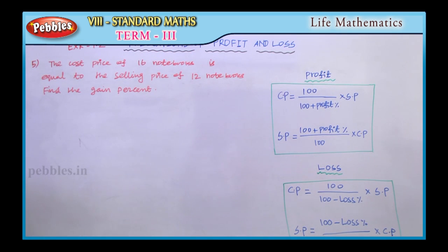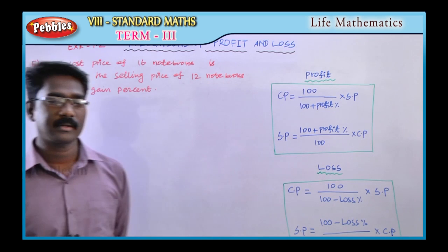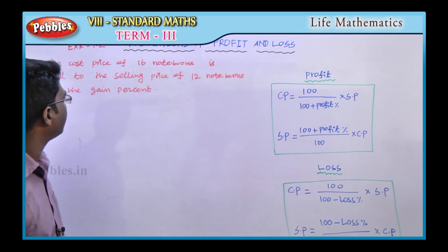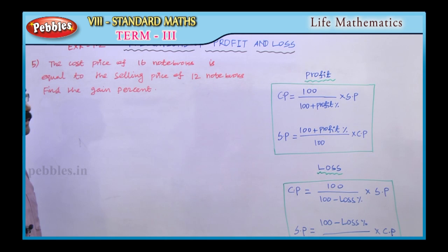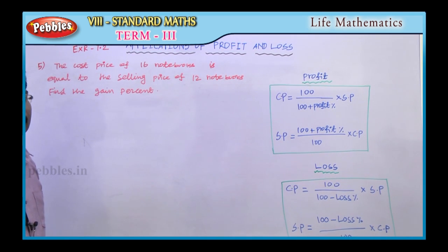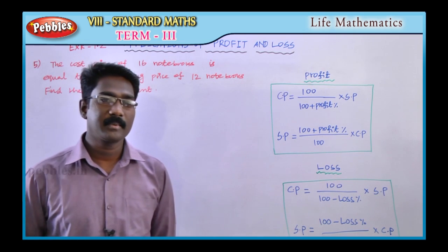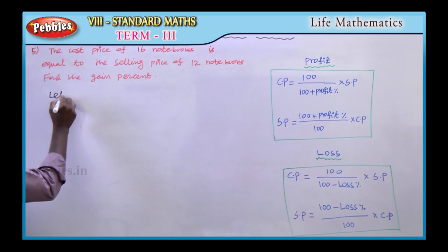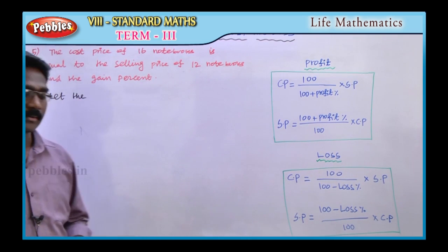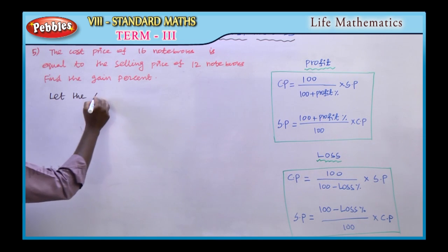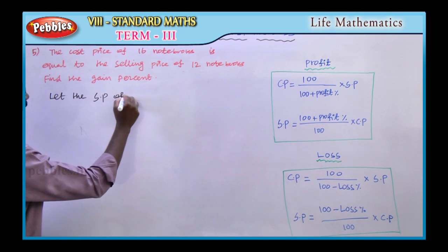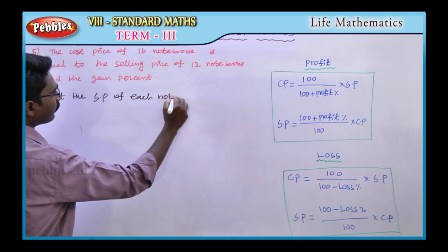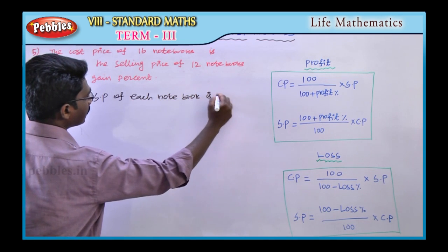Question number five: the cost price of 16 notebooks is equal to the selling price of 12 notebooks. Find the gain percentage. Let the selling price of each notebook be X.